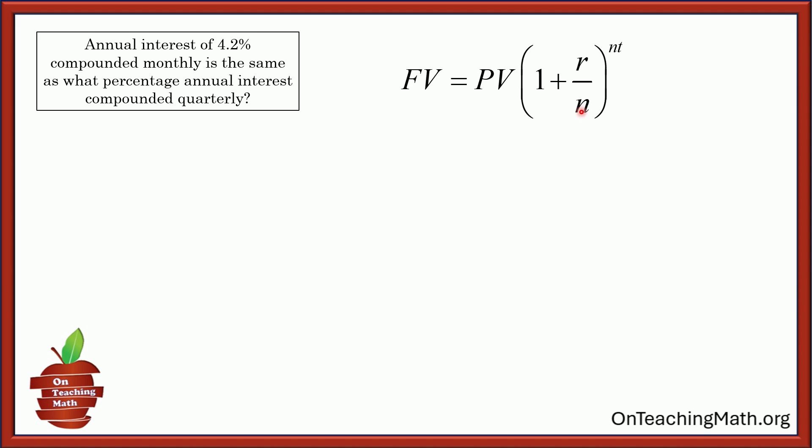N is the number of times it's compounded per year. N is the same in both, and T is, of course, time in years. All right. So it says an annual interest rate of 4.2% compounded monthly. So that would be this right here. So the future value is equal to the principal, PV times 1 plus 0.042, that's 4.2%, divided by 12.